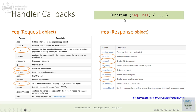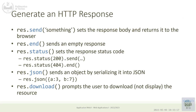To send a status code other than the default 200, call res.status(code) before sending the actual data. The status method returns the response object itself, so you can chain calls. Both send and json will close the request-response cycle — the server sends the response to the browser and forgets about it.